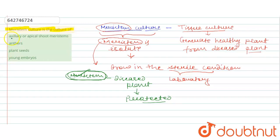Now we are going with our options. So our first option is axillary or apical shoot meristems. This option is obviously the correct option because